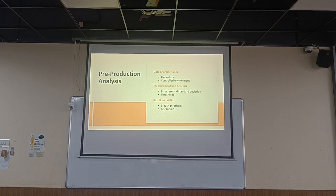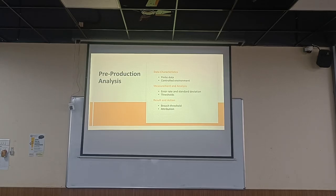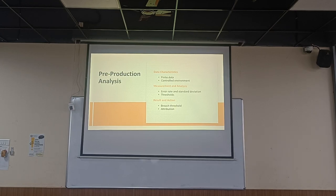The results are usually compared against thresholds and the output is that a threshold has been breached. The action you take is to attribute it to certain teams. For example, when you have a team of 400 developers working on the same codebase, you need to define which commit broke a particular interaction. Now we understand how to generate the data, we understand the characteristics of this data, and we know how to measure and analyze things.